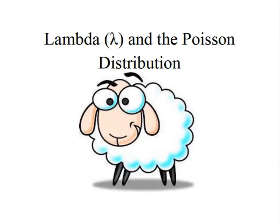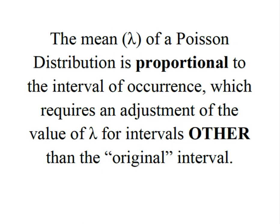Hey everybody, it's Professor Williams and I want to spend a couple of minutes talking about lambda or the mean of the Poisson distribution. We know that the mean of a Poisson distribution is proportional to the interval of occurrence. Remember that this Poisson distribution applies to intervals of time and distance and space.